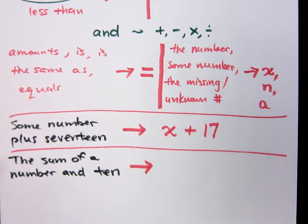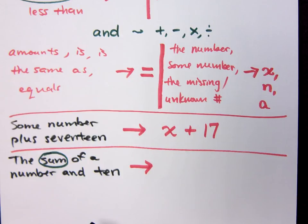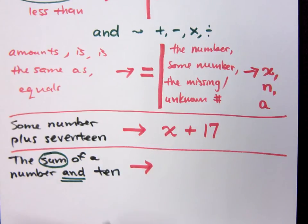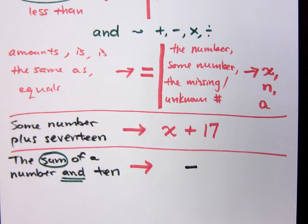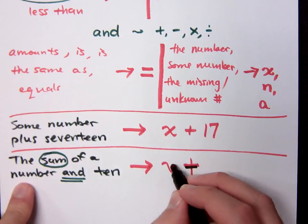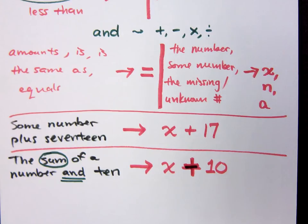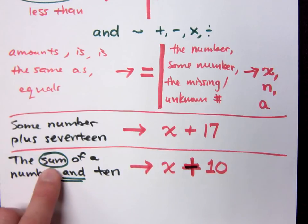Now I want us to be careful here. What's the first math word we see? Sum. When I see a word that's one of those main four operators — sum, difference, product, quotient — the next word I need to find is 'and.' So 'and' is going to be my addition because I'm talking about the sum. What two things am I adding? A number and 10. So it's x plus 10. I said you cannot say that 'and' is always addition — it's used with the word 'sum' to indicate addition. If it's with the difference, it indicates subtraction.